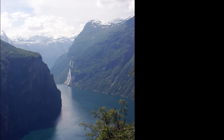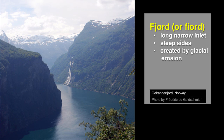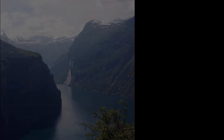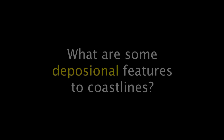An extreme example of coastal erosion is a fjord, like the ones we see in Norway or the southern Alps of New Zealand. This is just a narrow inlet with steep sides that was carved out by glaciers and may have taken millions of years. Let's take a look at some of the features associated with depositional coasts.